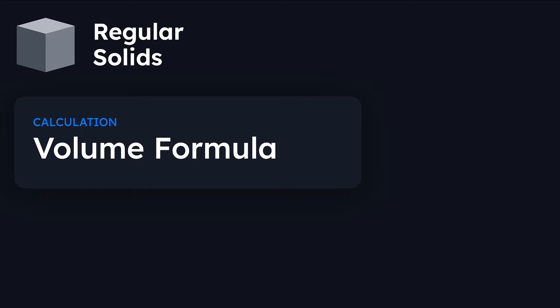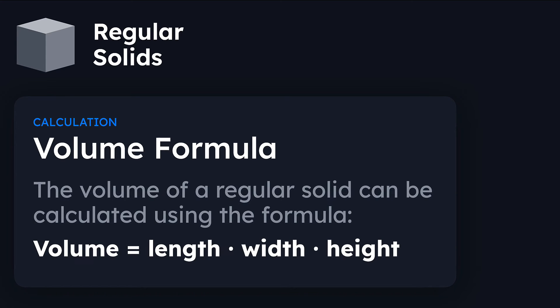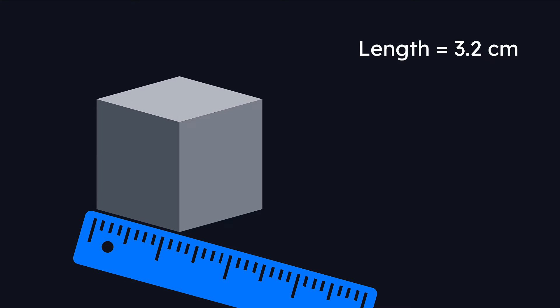To figure out the volume of a regular solid, we need to use the volume formula. That formula states that you can calculate the volume by multiplying the length of the solid by the width of the solid by the height of the solid. So let's look at a simple example.